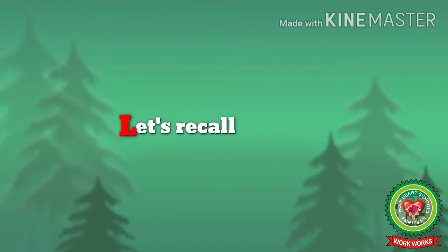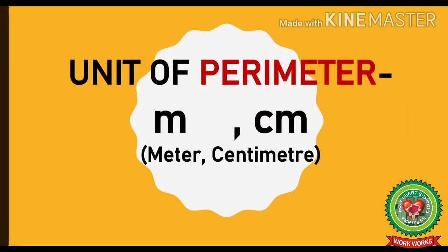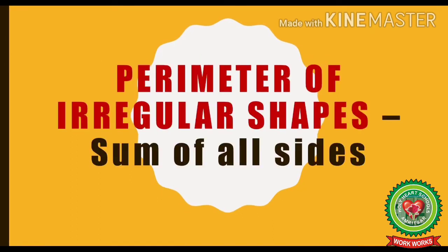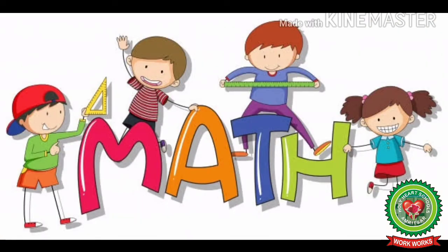Now let us recall what we have learnt today. Perimeter is the boundary of a closed figure. The unit of perimeter is meter or centimeter. To find the perimeter of irregular shapes, we use the formula sum of all sides. I hope kids you have understood how to find out the perimeter of irregular shapes. Now complete the homework given to you in your snap homework. Thank you.